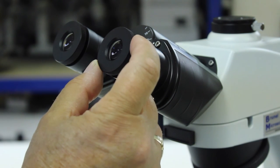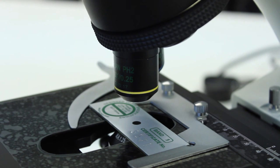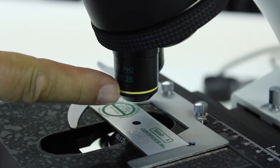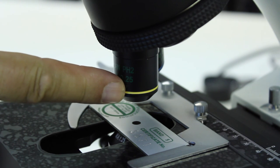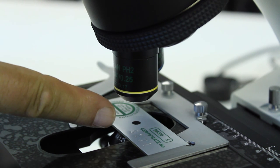Asbestos fiber counting uses the times 40 phase contrast objective, but we're using the times 10 with the yellow band here just as a mechanism for more easily finding the lines on this test slide.